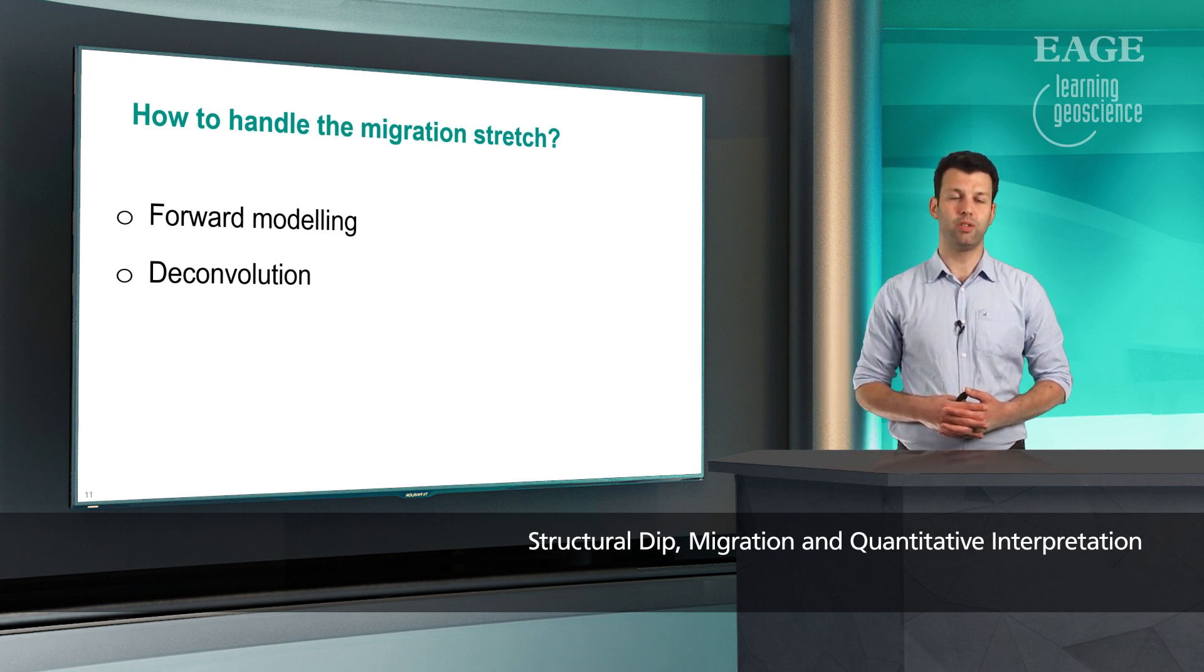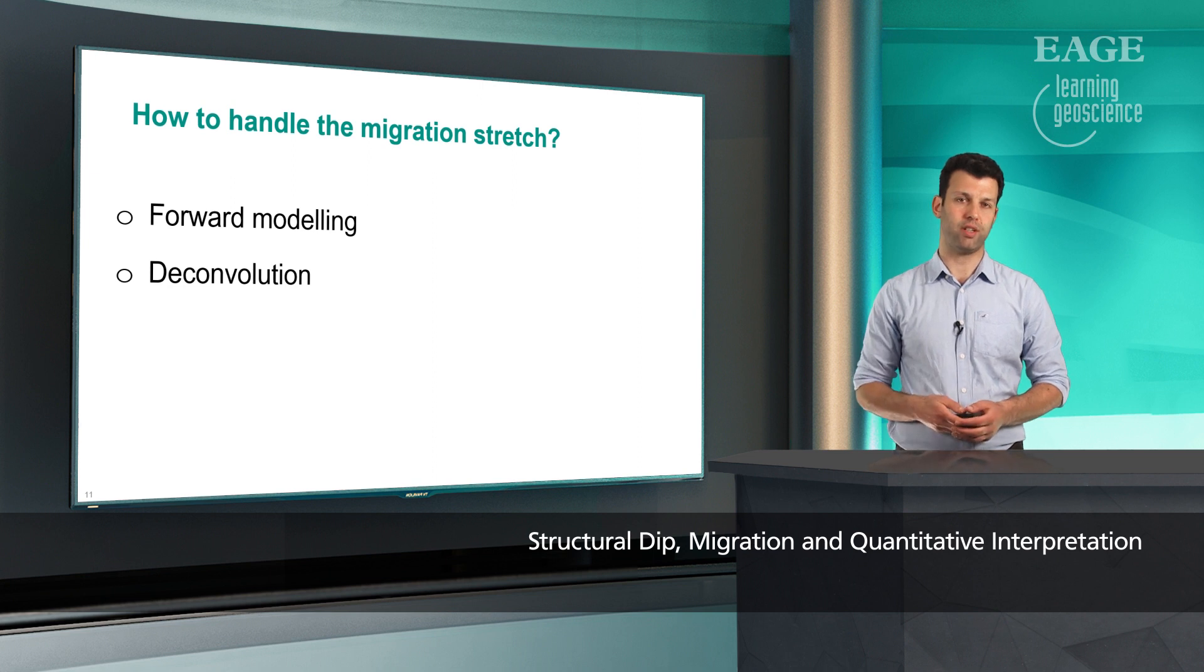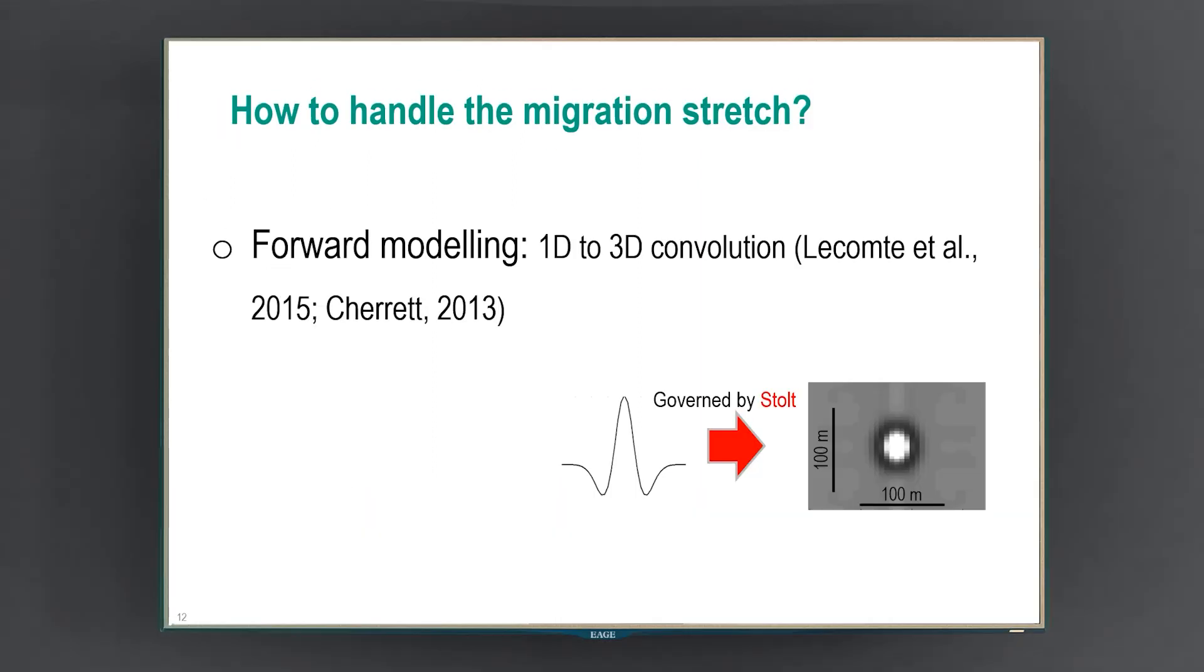It's not all bad news. There are some solutions, and we could address this in forward modeling, or we can do a deconvolution to remove the migration stretch. For forward modeling, we can use a 3D convolution instead of 1D convolution, such as the one proposed by Lacombe and her colleagues in 2015, or a simpler solution as proposed by Cheret in 2013, which effectively uses a Stolt formula to convert a 1D wavelet or 1D convolution to 3D convolution, but governed by the Stolt equation.